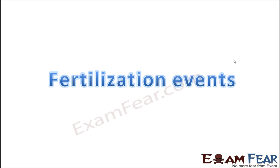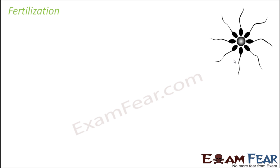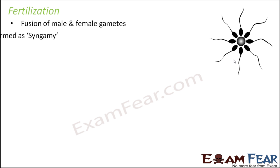What happens during the process of fertilization? In simple words, fertilization is the fusion of the male and female gametes. This fusion is also known as syngamy — the word 'syn' means together and 'gamy' means marriage, so when two things combine with each other, that is called syngamy.